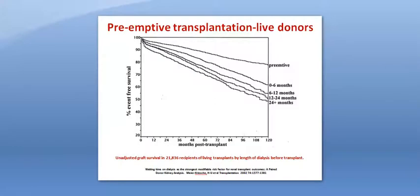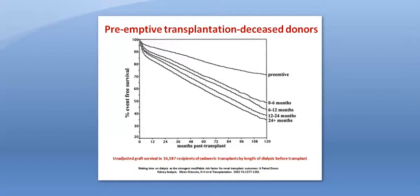Pre-emptive transplantation means that the recipient would receive a kidney before the need for dialysis. Pre-emptive transplantation should be considered as the first choice for pre-dialysis CKD stage 5 patients. Pre-emptive transplantation has been shown to have better graft and patient survival compared to receiving a kidney on dialysis, for both living donors and deceased donors. The longer the wait on dialysis before receiving the kidney, the worse the survival post-transplantation compared to receiving a kidney pre-emptively.